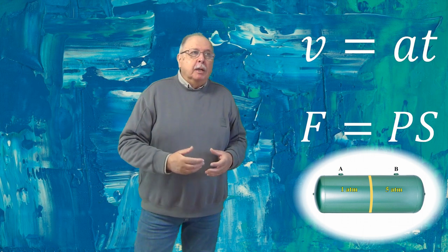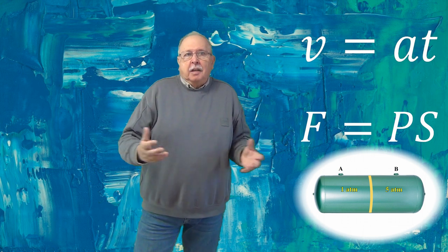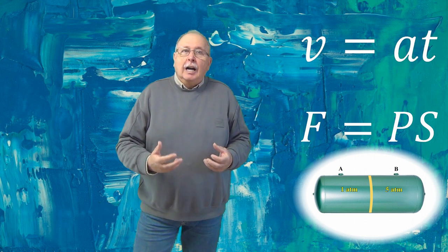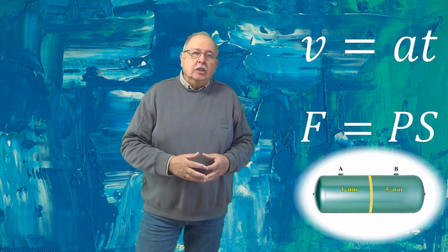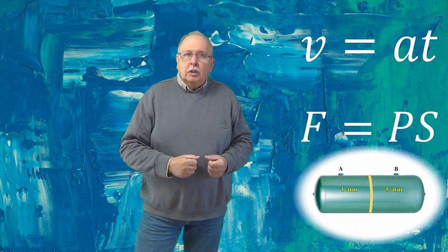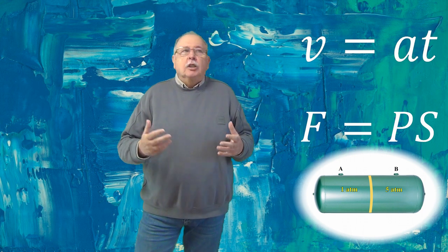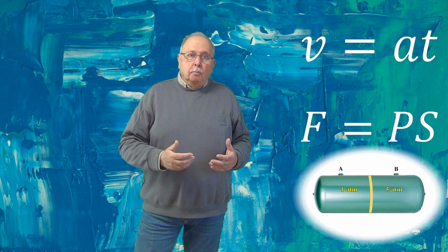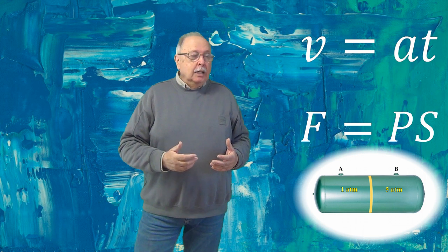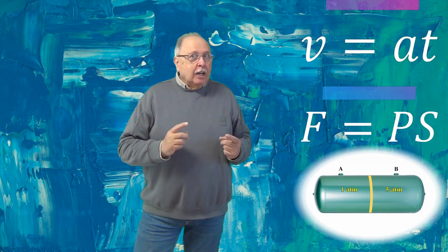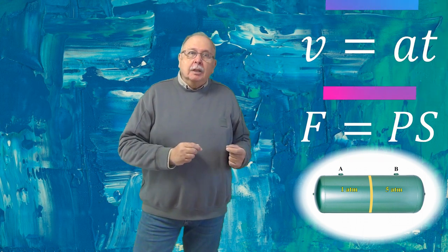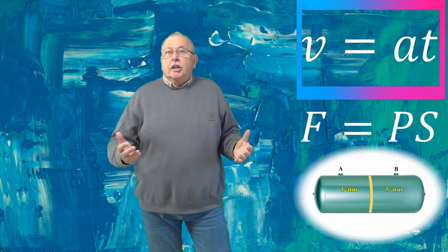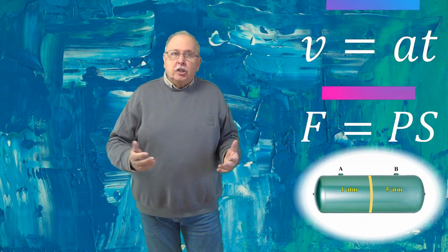Să presupunem că pentru cazul nostru acest timp este 5 minute. După 5 minute, nu mai putem detecta aer ieșind din niciunul dintre cele două compartimente. Practic a ieșit tot aerul în vid. Deci aerul din cele două compartimente a avut aceeași accelerație același timp. Și atunci, în conformitate cu formula pe care v-am arătat-o, a ieșit cu aceeași viteză.